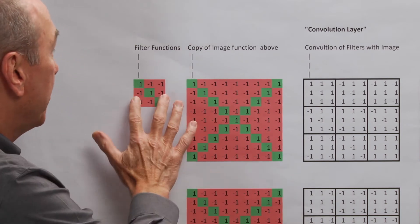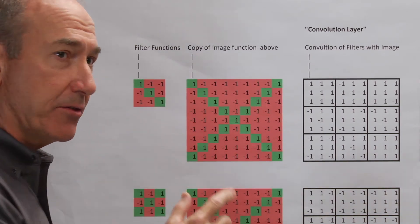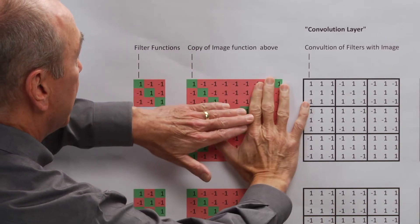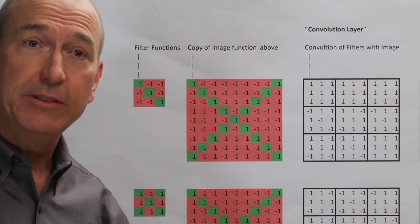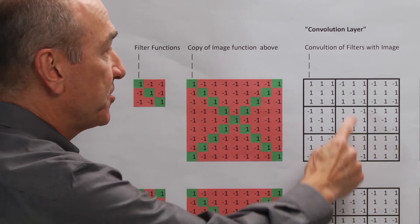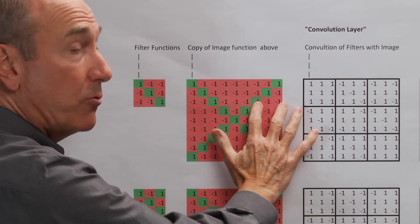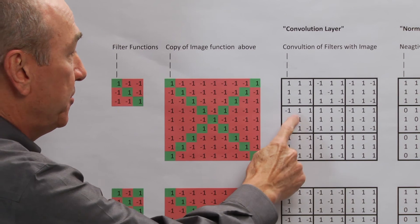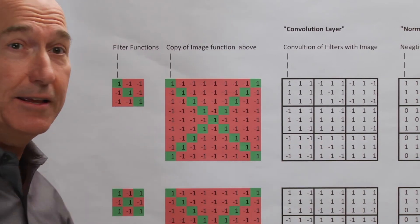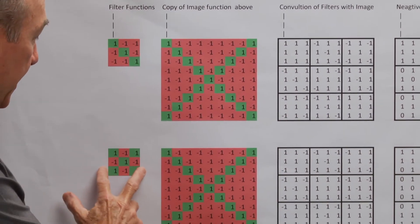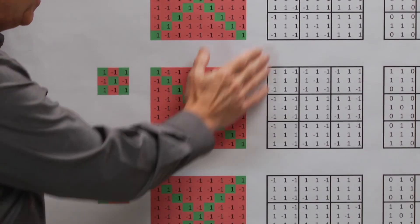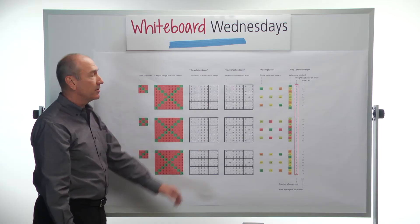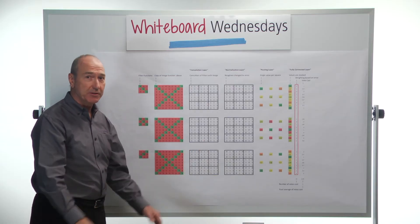After that, we're going to shift the filter function over three squares to where it's now overlaying just the top middle part of the image function, and do that same multiplication. We'll store the numbers here. Then we'll shift it three more spaces over and multiply and get that last set of numbers, and do the rest for the rest of that image. We're going to do the same thing with this filter function and that one, and we end up with these three arrays of numbers. This is now our convolution layer, the results of our convolution.